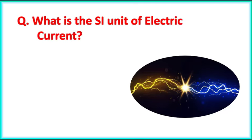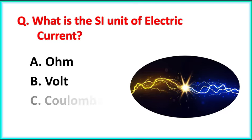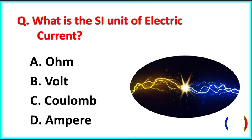What is the SI unit of electric current? The correct answer is Option D. Ampere.